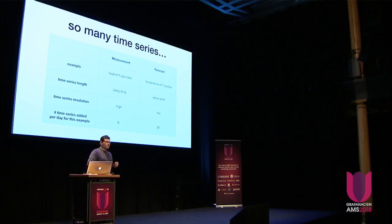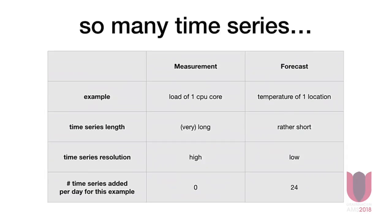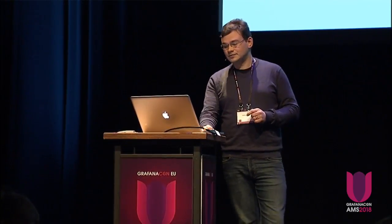That leads to quite a number of time series in the database. Every hour we calculate roughly 10,000 time series, which leads to 240,000 time series added to the database every day, or about 7 million each month. We had to consider this when thinking about database performance. Back when we started, we had strict retention policies in place to keep the database light, and every now and then we dropped time series by hand to keep the system responsive. Performance improved a lot over the years — thanks to the InfluxDB team.